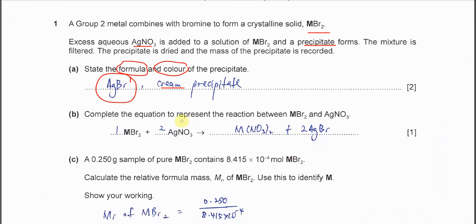Complete the equation to represent the reactions between MBr2 and silver nitrate. This one is very easy, just try to form the products. M with the nitrate from the salt and the silver with the bromide. Balance it and you'll get this equation.